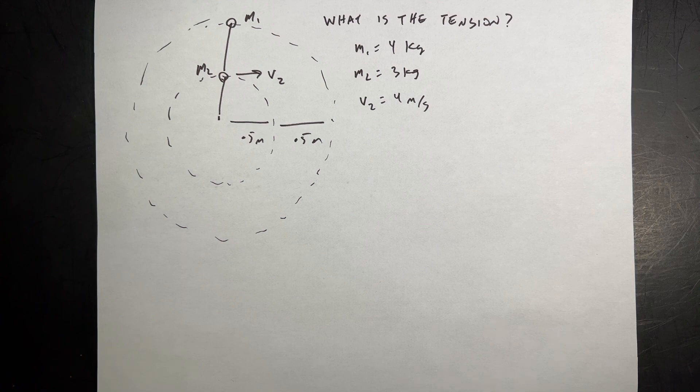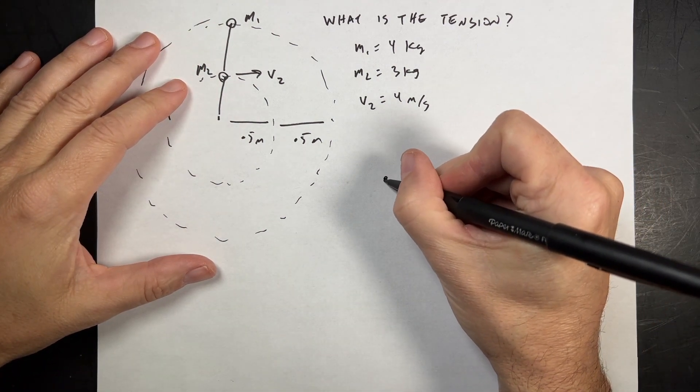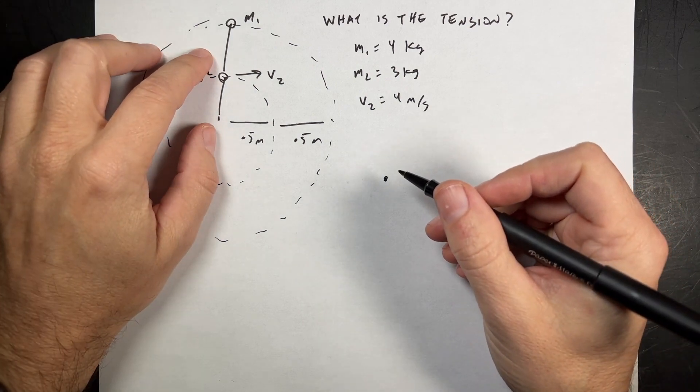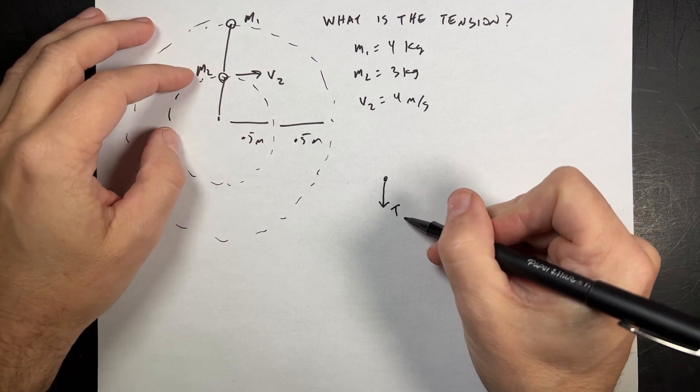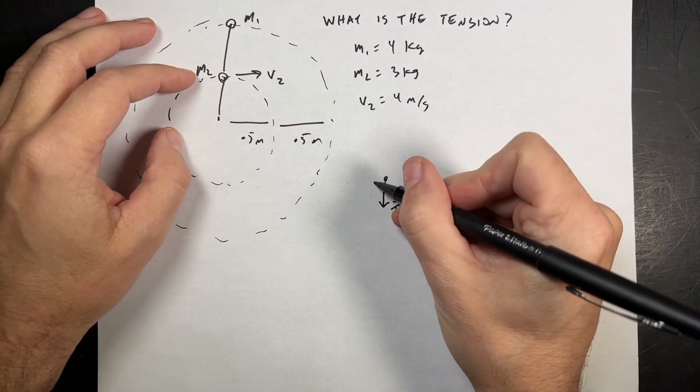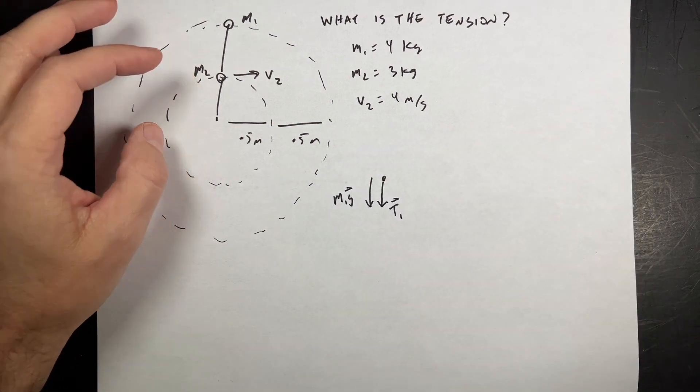Let's start off with a force diagram for mass 1. If I draw mass 1 right here, I know that there are two forces acting on it. The tension, strings only pull, so I have tension. I'll call that T1. And then I have the gravitational force M1g. Both of those are pulling down.